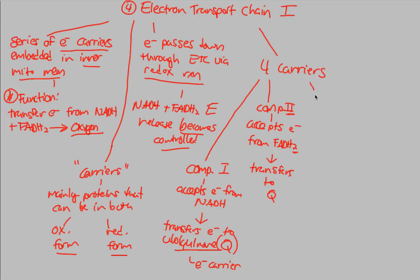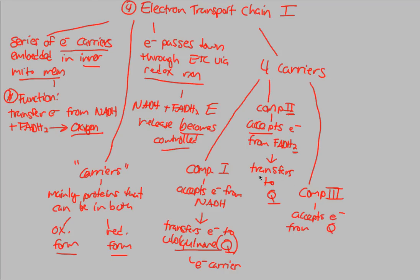Then Complex III gets involved. Complex III, also on this inner mitochondrial membrane, accepts an electron from ubiquinone — ubiquinone donates its electron and Complex III accepts it from ubiquinone. But again, it's all about accepting and transferring. Once Complex III has accepted an electron from ubiquinone, it transfers it specifically to what is known as cytochrome C.